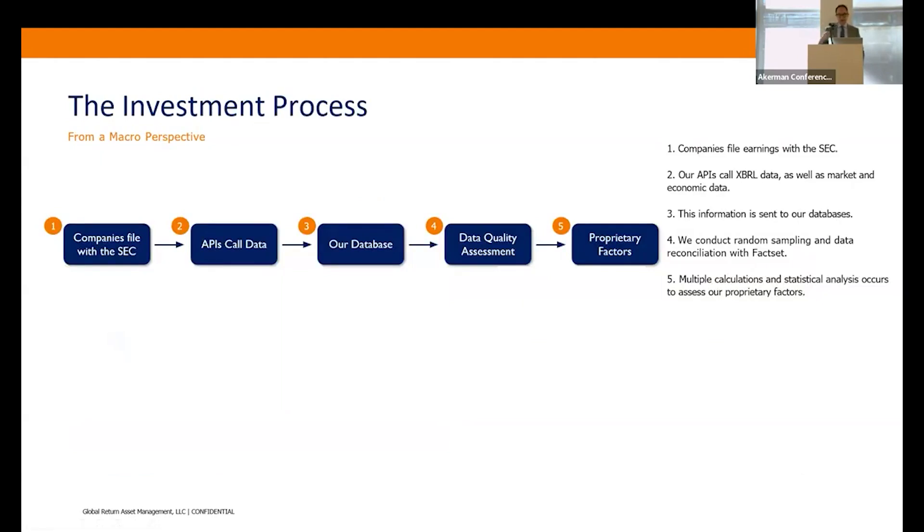Our AI algo investment process—you can see here there's five steps. We all know public companies file with the SEC. In fact, we're doing this every 15 minutes. So I know since I walked in here we've already scraped the SEC website twice for the entire Russell 3000, which technically is I think like 3,300 companies, and we are pulling anything that they have filed. That data is being pulled into our database, we're doing a data quality assessment, and then step five, we're calculating multiple statistical analyses and evaluating each company's proprietary factors.